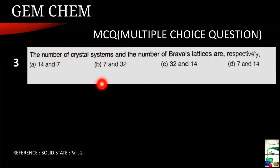This is a question from the solid state and this is a direct question. You can watch the solid state part 2 video for greater details. The answer is the number of crystal systems and the number of Bravais lattices are respectively. So we know that there are seven crystal systems and 14 Bravais lattices. So our answer comes to be as the D answer.